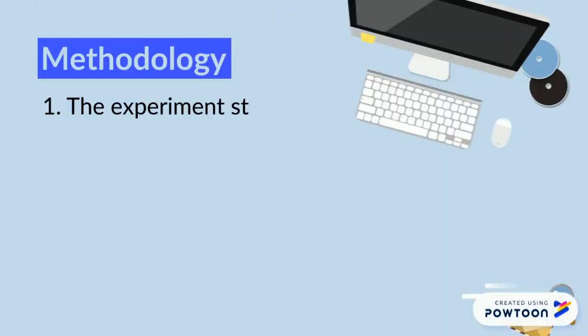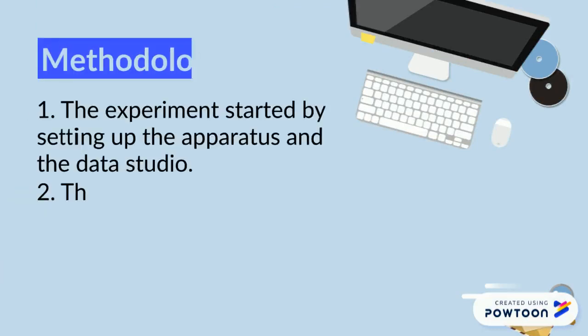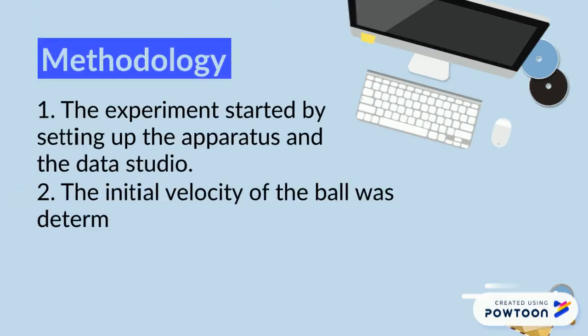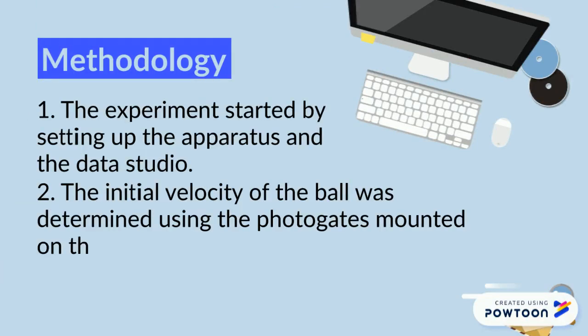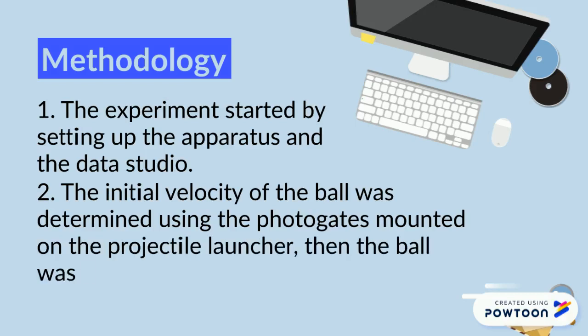The experiment started by setting up the apparatus and the data studio. The initial velocity of the ball was determined using the photogates mounted on the projectile launcher. Then the ball was fired three times to get the average speed of the ball.